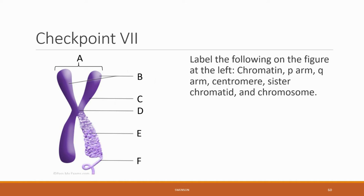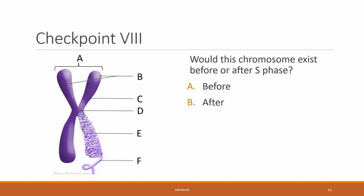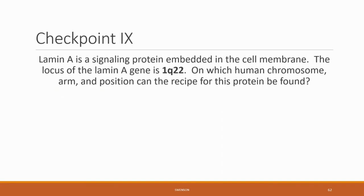Checkpoint 7: label the following on the figure at the left — chromatin, P-arm, Q-arm, centromere, sister chromatid, and chromosome. Checkpoint 8: would this chromosome exist before or after S phase? Checkpoint 9: lamin A is a signaling protein embedded in the cell membrane. The locus of the lamin A gene is 1q22. On which human chromosome arm and position can the recipe for this protein be found? And that is the end of this chapter. Thank you all for joining us and we'll see you for the next one.